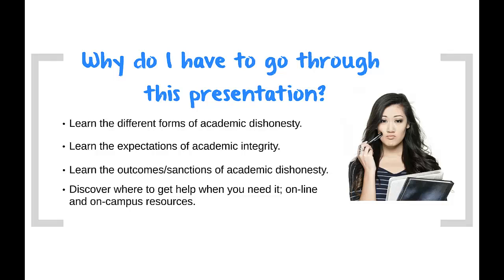Throughout this presentation, you will learn: one, the different forms of academic dishonesty; two, the expectations of academic integrity; three, the outcomes or sanctions of academic dishonesty; and four, where to get help when needed regarding online and on-campus resources.